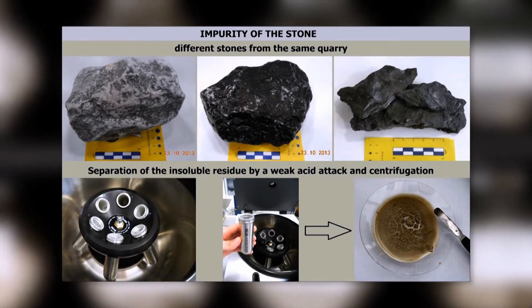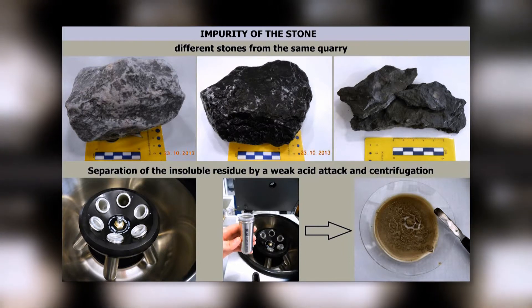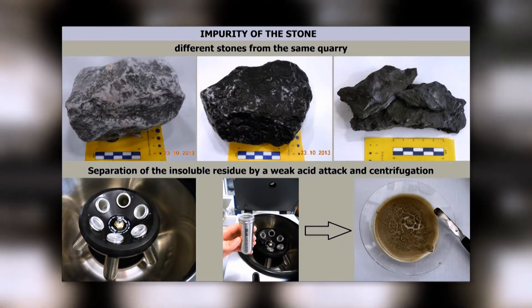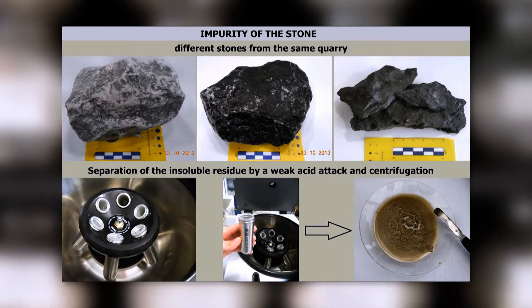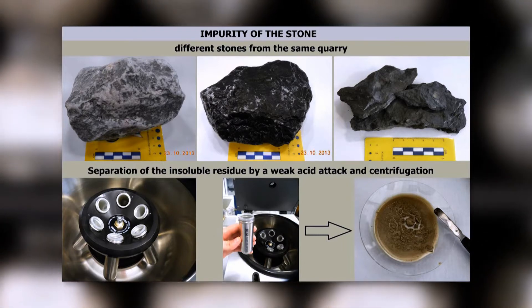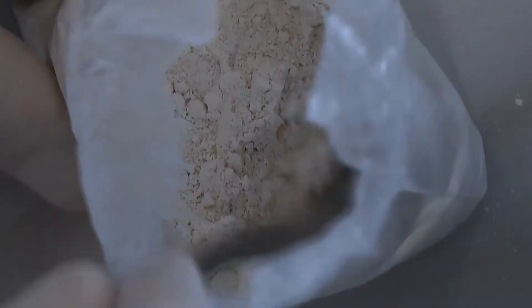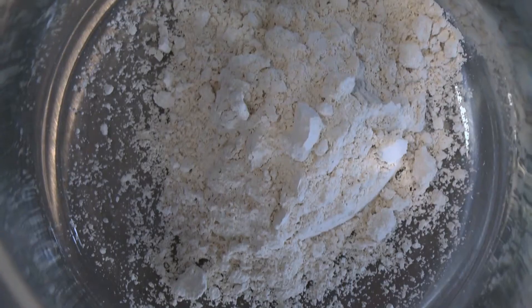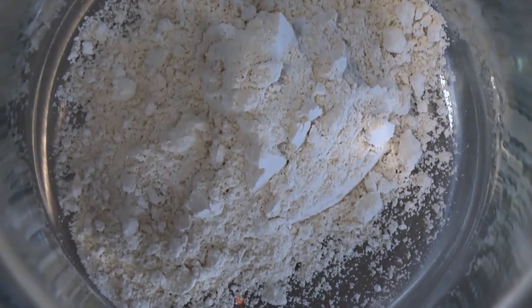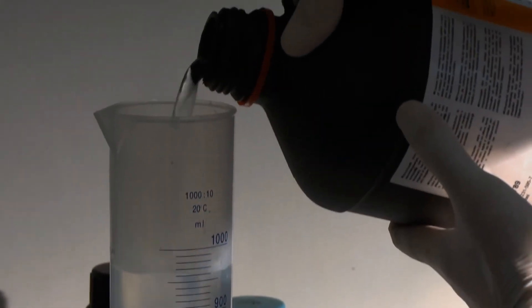The impurity content of the carbonate rock could be a particular problem in the production of high calcium quicklime, even if this content is lower than 5%. Indeed, a specific procedure designed for the separation of the insoluble residue from the matrix of the carbonate rock has been adopted.